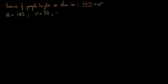Finally, we have a sample size of 41 people. We need a formal statistical test to assess: given a sample of 41 people, an average height of 185, and a sample variance of 30 centimetres squared, can we prove this person wrong?